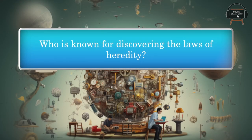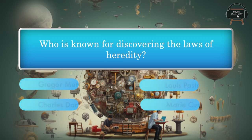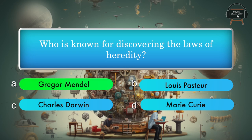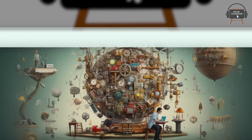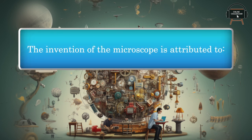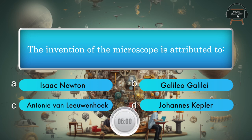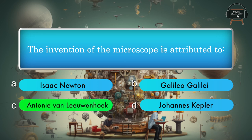Who is known for discovering the laws of heredity? Gregor Mendel, Louis Pasteur, Charles Darwin, Marie Curie. Answer: Gregor Mendel. The invention of the microscope is attributed to: Isaac Newton, Galileo Galilei, Antony Van Leeuwenhoek, Johannes Kepler. Answer: Antony Van Leeuwenhoek.